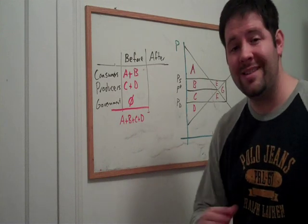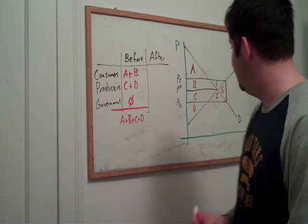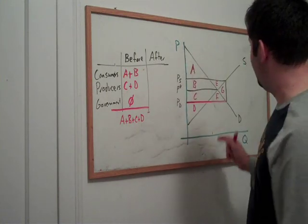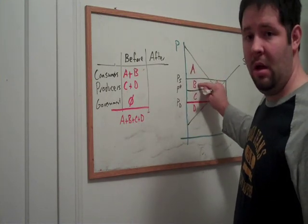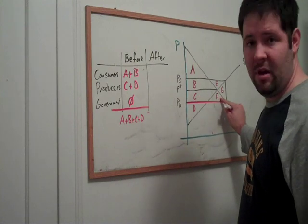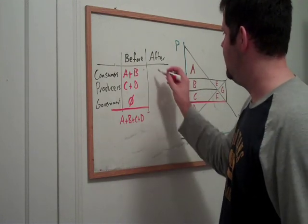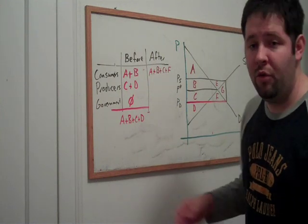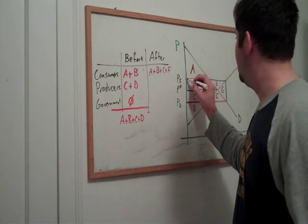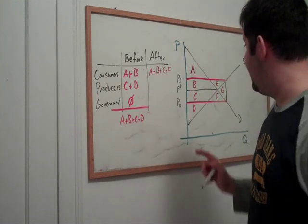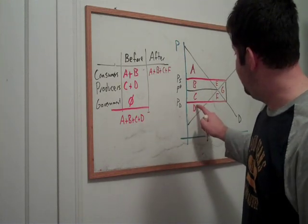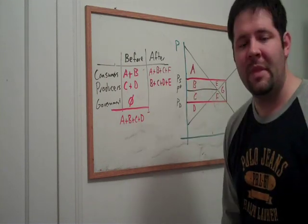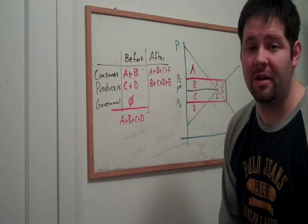First thing we'll notice is that the price decreases for the consumers down to PD. We go from the price up to the demand curve and that's A plus B plus C plus F. That's the consumer surplus. Similarly, we can do the producer surplus. The new price is PS. And we go from PS down to the supply curve. That gives us B plus C plus D plus E.